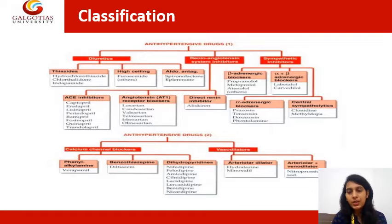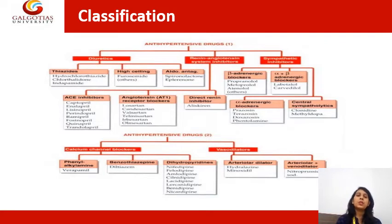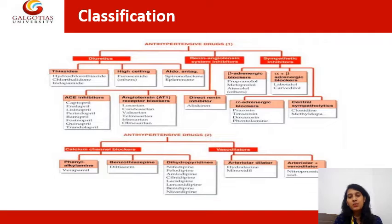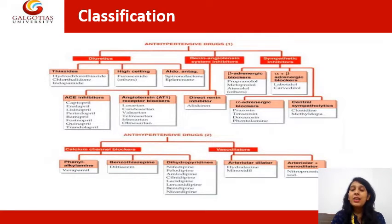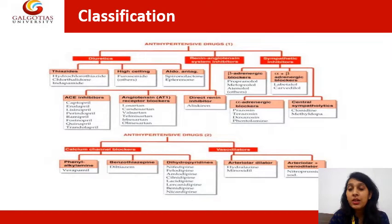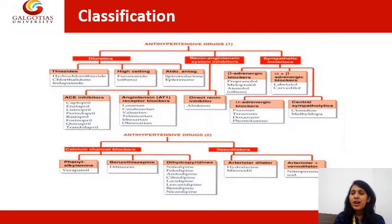All calcium channel blockers are broadly classified into two categories on the basis of their chemical structure. The first category is dihydropyridines and the second is non-dihydropyridines. The drugs classified as dihydropyridines have a pyridine ring present in their structure, while those in the non-dihydropyridine category do not have a dihydropyridine ring.